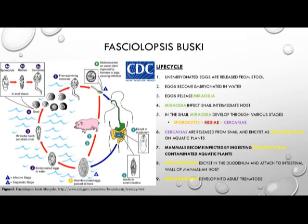Mammals, such as humans, come along ingesting the metacercaria-contaminated aquatic plants and become infected. The metacercaria then excysts in the duodenum and attaches to the intestinal wall of its mammal host, where it develops into an adult trematode, begins to produce eggs, and completes the life cycle.